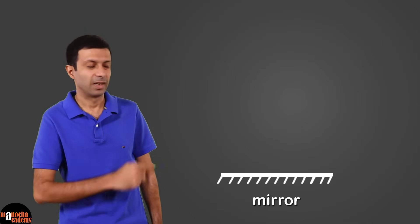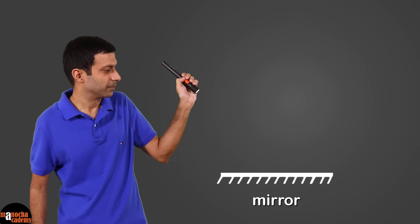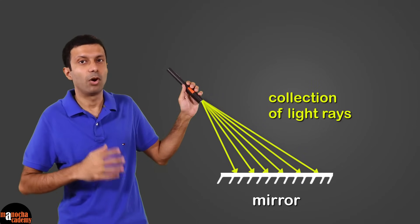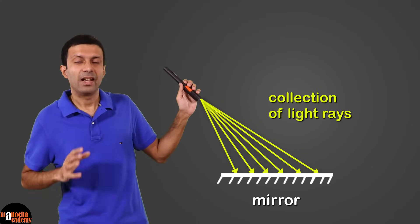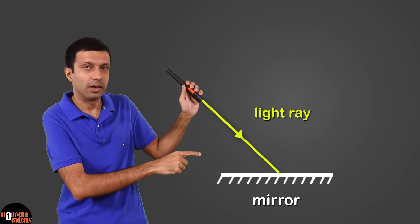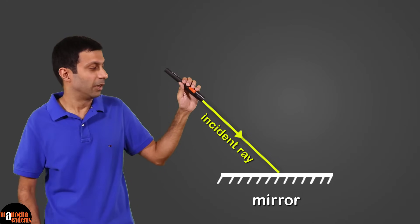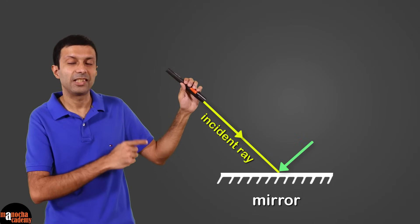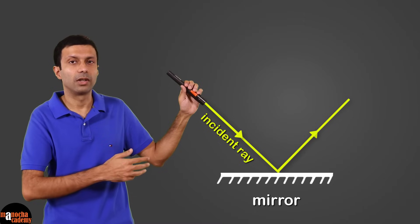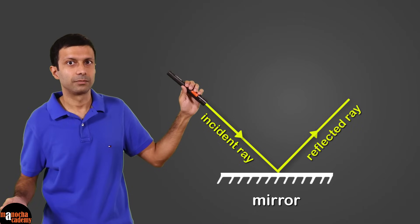Light follows certain laws of reflection, but before we discuss those, let's do a quick recap on the basic terms. Let's say there's a mirror here and I shine this torch towards it — the torch gives out a beam of light. A beam is a collection of light rays. Let's consider a single ray of light for simplicity. The ray of light falling on the mirror is called the incident ray, and the point where the incident ray hits the mirror is called the point of incidence. The ray that comes back is called the reflected ray.